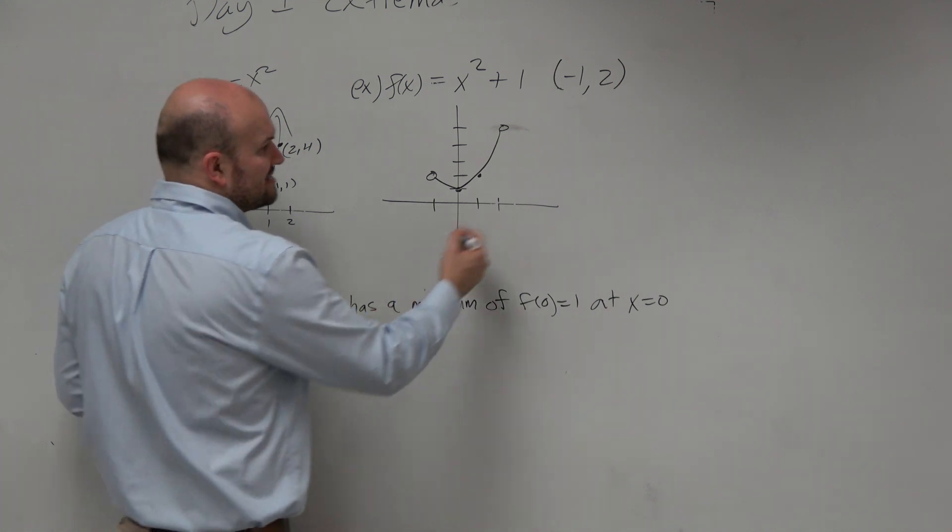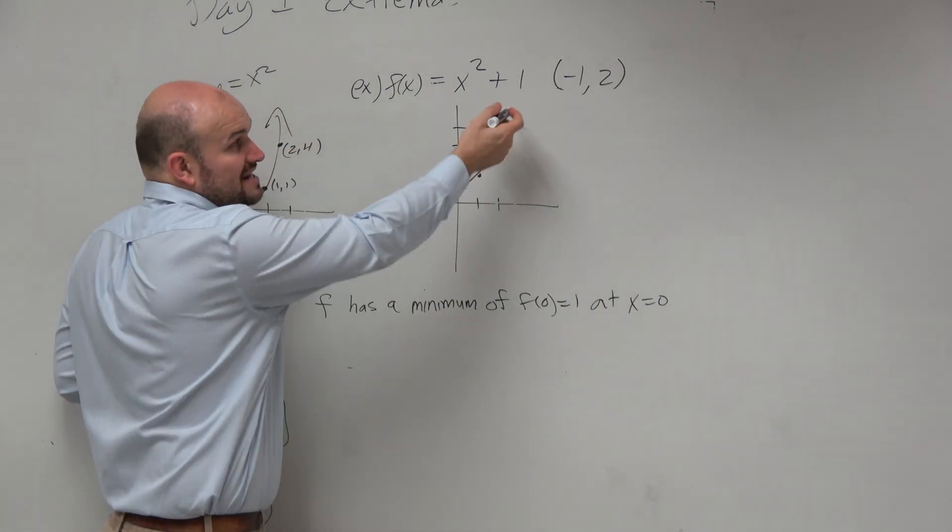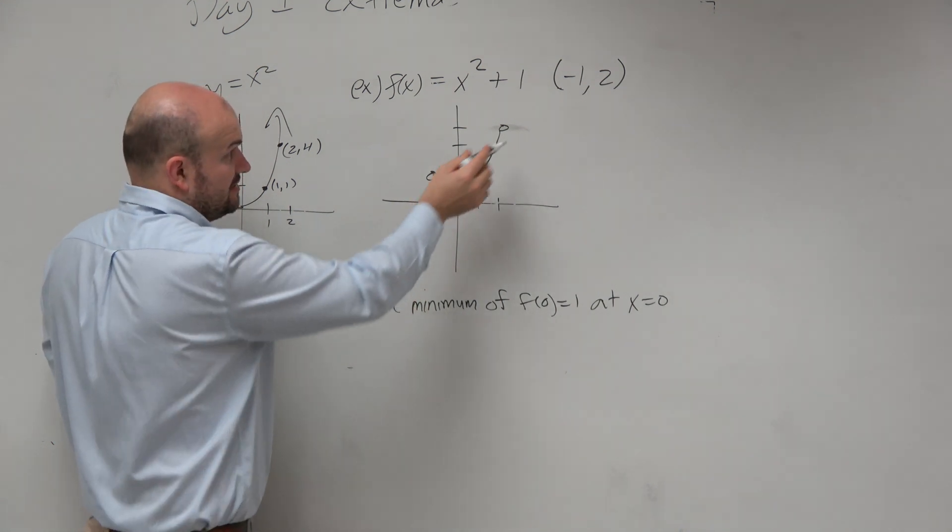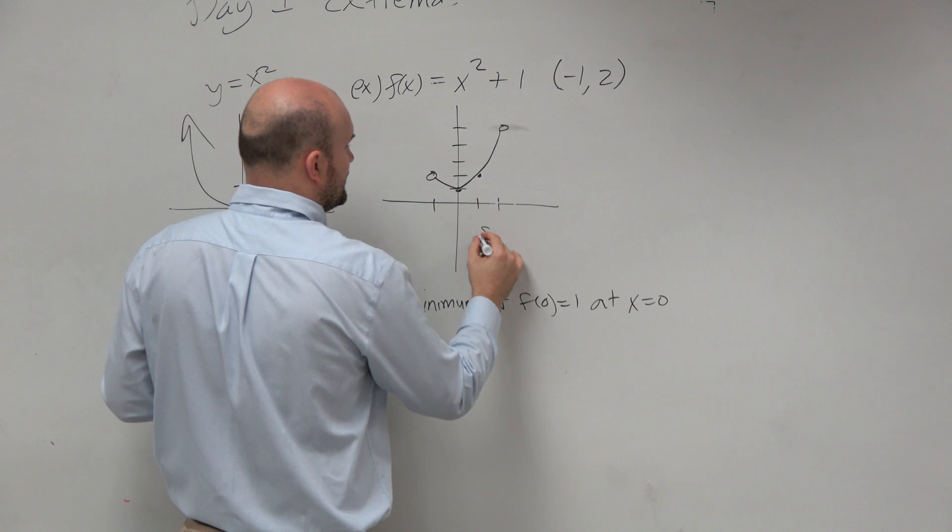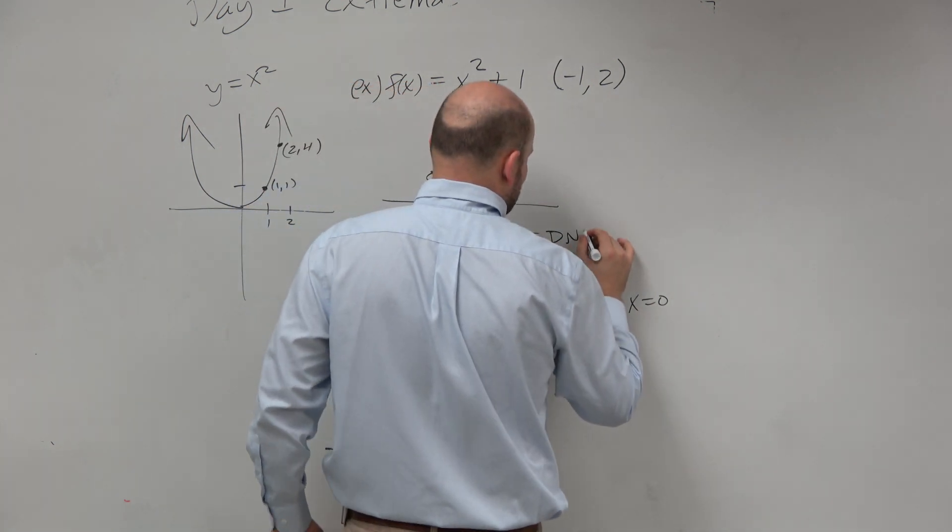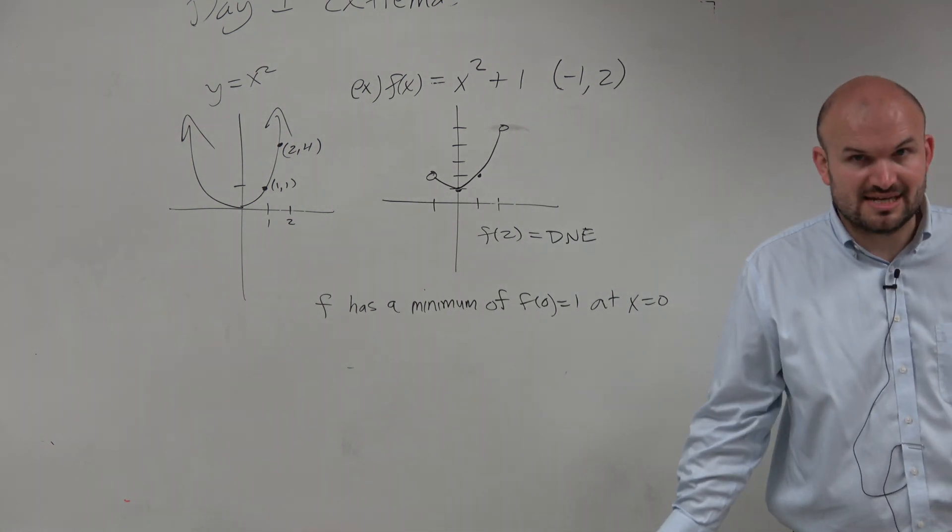But let's look at the max. This is kind of interesting. Because some of you guys might look at, well, 5 is not included. If we say f of 2, that does not exist, right? There's a hole there. It doesn't exist.